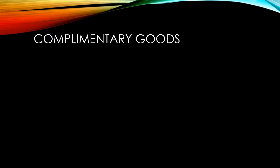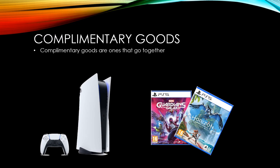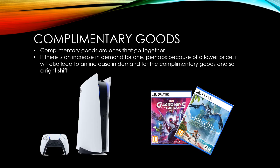Complementary goods are goods that go together. An example might be games consoles and the games that can be played upon them. If there is an increase in demand for one product, it will also lead to an increase in demand for the complementary goods sold alongside it — if we sell more consoles, we are also likely to sell more games for those consoles. Therefore, an increase in demand for a complementary good will lead to an increase in demand for our good as well, and a left shift of demand for a complementary good would lead to a left shift of demand for our good too.